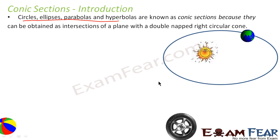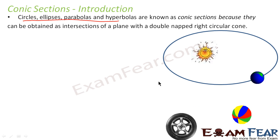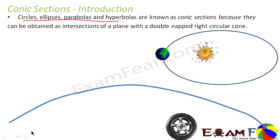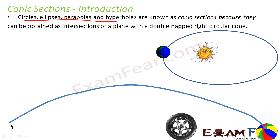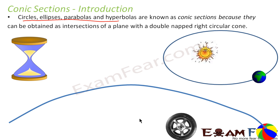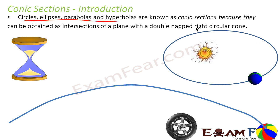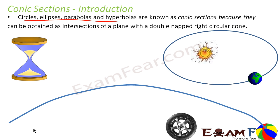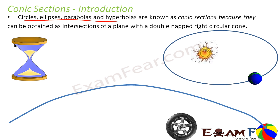If you throw a ball, it covers a parabolic path — this path is a parabola. And if you see a stopwatch, its shape is a hyperbola. So circle (tyre), ellipse (Earth's path), parabola (trajectory of a thrown ball), and hyperbola (stopwatch) are all examples from daily life.